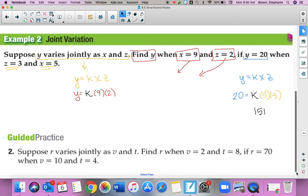So if I write 15K is equal to 20, and then I divide both sides by 15, K would equal, and I can reduce that down to 4 over 3. So now I can take this K and I can plug in and I'll be able to find my Y.